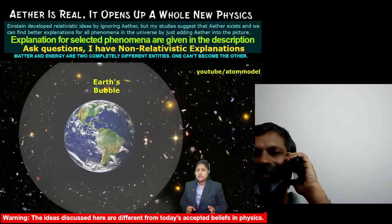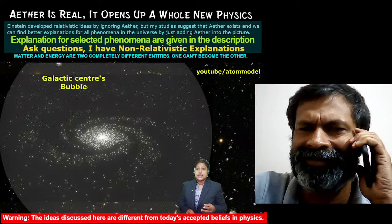Regardless of earth's motion, the speed of light will be the same in any direction — that is, the light speed within the earth's bubble. Like earth, the sun sits inside a larger bubble. The center of the Milky Way galaxy — the galactic center — sits inside a gigantic aether bubble.